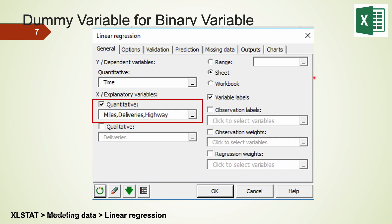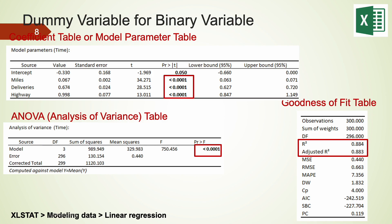Using xlstat, we can run a linear regression model using these three different independent variables: miles, deliveries, and highway. One thing I'd like to point out is that highway is a categorical variable, but because the values are coded as 1 and 0, highway should be treated as a quantitative variable, not a qualitative variable in xlstat. For a recap of how we can use xlstat for simple linear regression, please click on the video linked on the upper right corner of this screen. The xlstat output is given on this screen, and there are three sets of different tables.